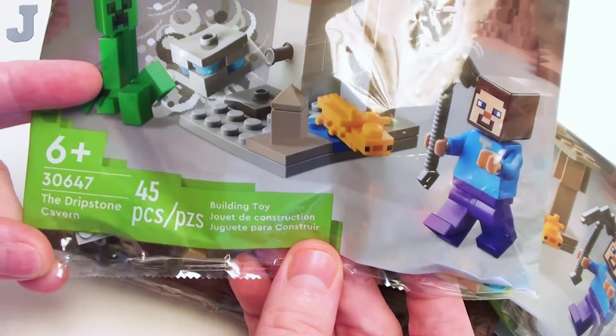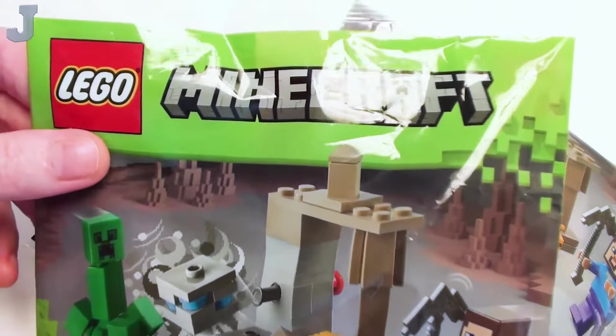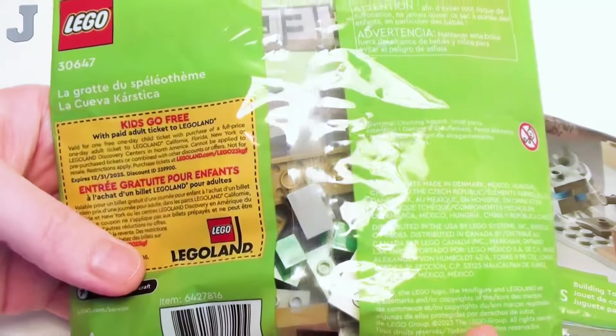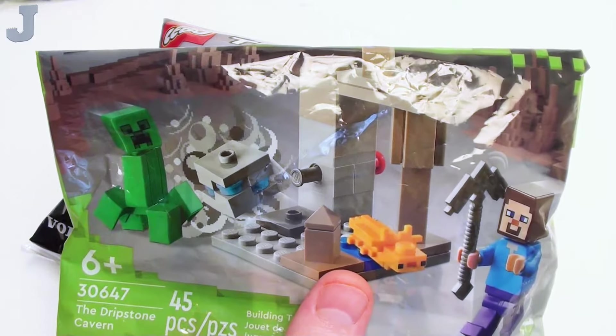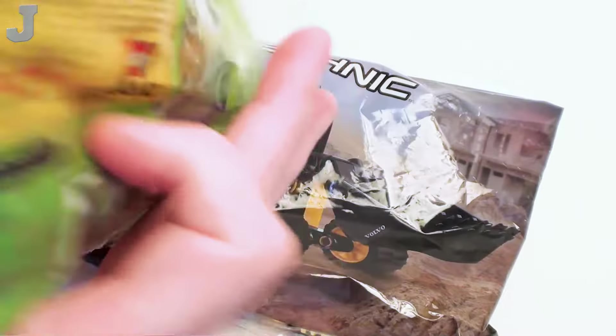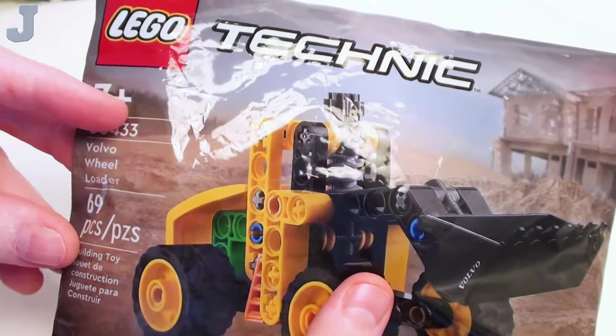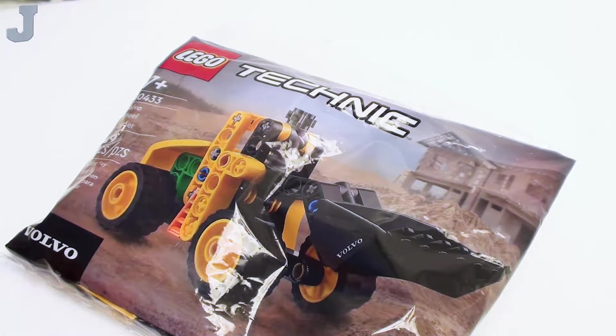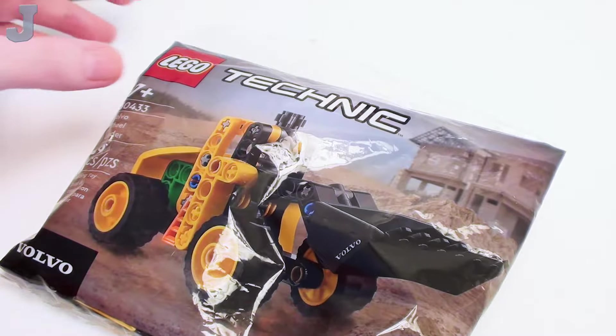This is the Dripstone Caves. I've already done a review on this. It's by Lego Minecraft, and I got the hiccups. I have another one that's been opened, and this is what I call the Spoiled Brat Special. We'll get to that in a bit. And then we have the Volvo Wheel Loader by Lego Technic. These are all duplicate sets that I've had before.